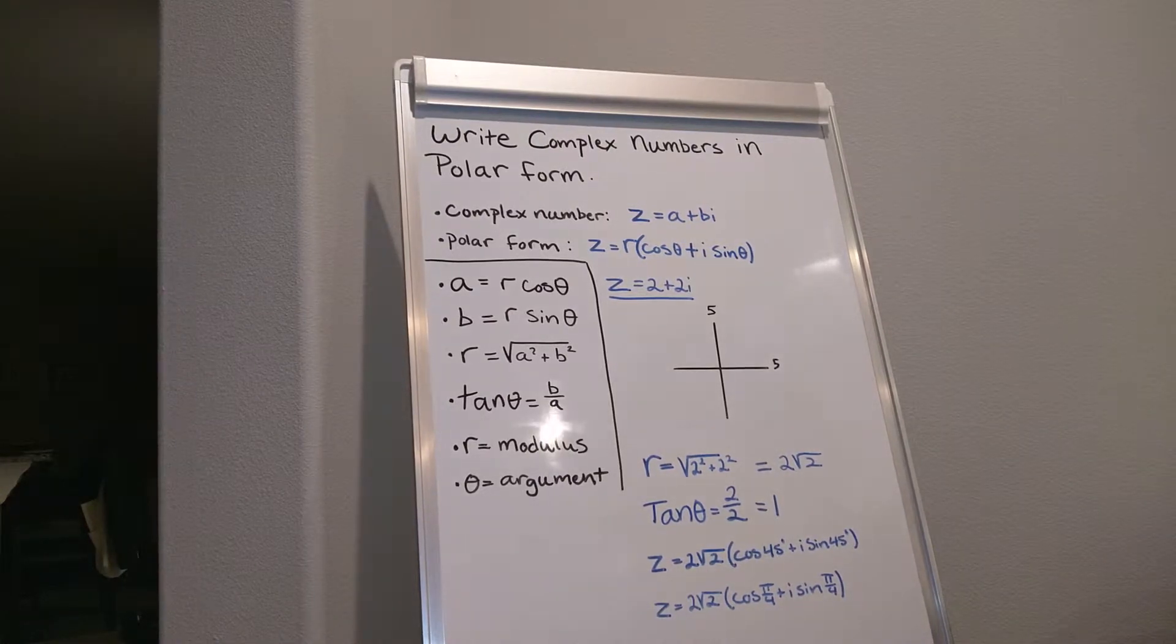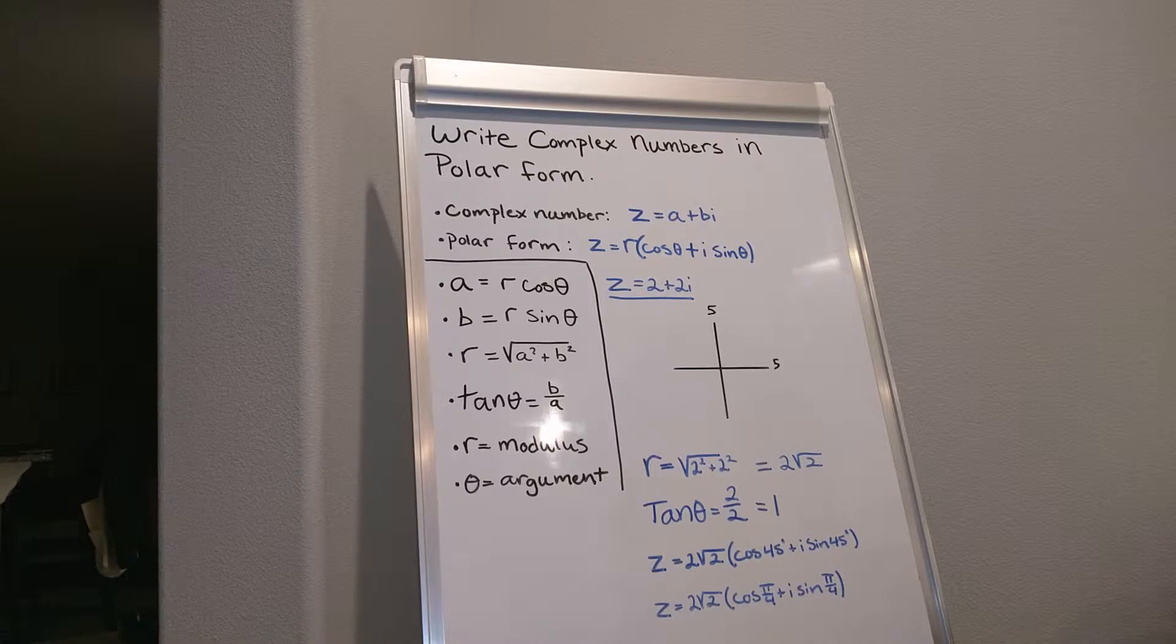Write complex numbers in polar form. A complex number formula is z equals a plus bi. In polar form, z equals r cosine theta plus i sine theta.